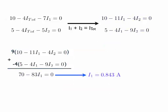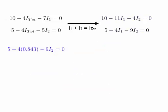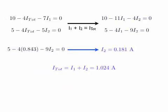The positive number means I guessed correctly about the direction of I1. I'm now going to plug that value back into one of my loop equations — I'll use the second loop equation, replacing I1 with 0.843 amps, and solve for I2. I get again a positive value for I2, so it looks like I guessed very well in this case. And since I-total is defined as I1 plus I2, I get a value for I-total as well.